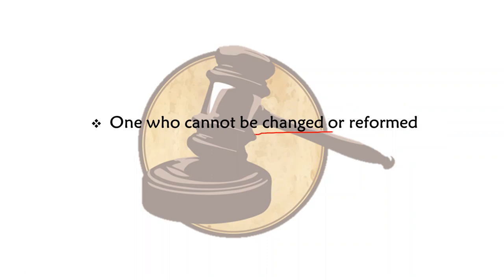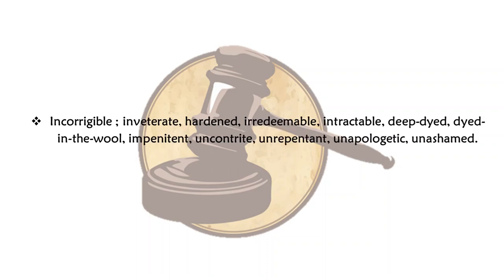One who cannot be changed or reformed. Say you're a criminal sent to jail hoping you'll reform, but you keep committing the same crime — what would you be called? Incorrigible. The synonyms are inveterate, hardened, irredeemable, intractable, deep-dyed, impenitent, uncontrite, unrepentant, unapologetic and unashamed.